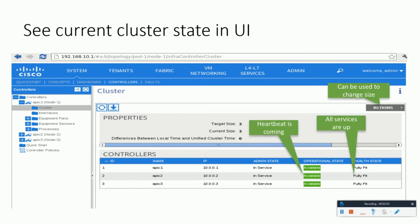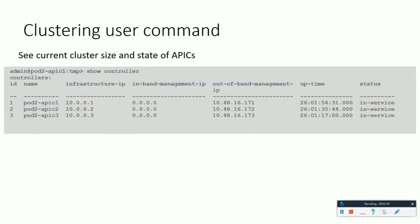As we can see, everything shows green. The 'show cluster' command is a very handy one when you need to check the overall health of the cluster over CLI.